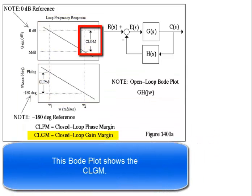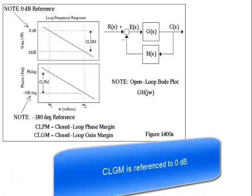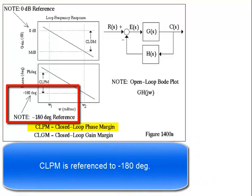This Bode plot shows the closed-loop gain margin, and this Bode plot shows the closed-loop phase margin. Closed-loop gain margin is referenced to 0 dB, and closed-loop phase margin is referenced to negative 180 degrees.